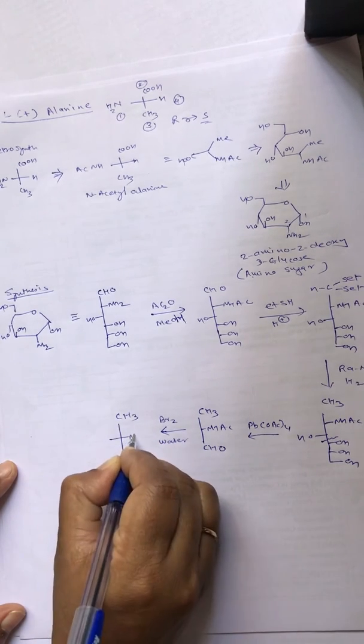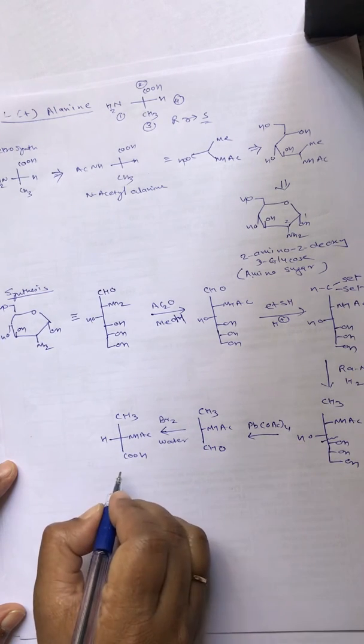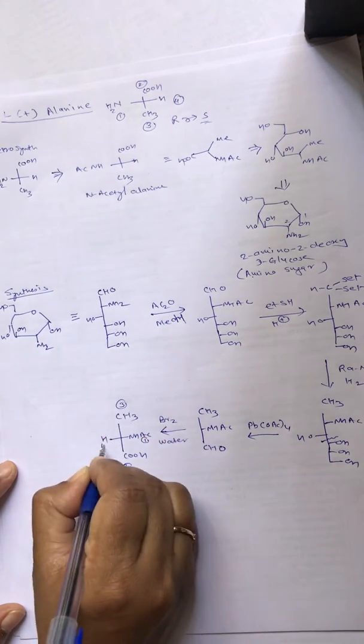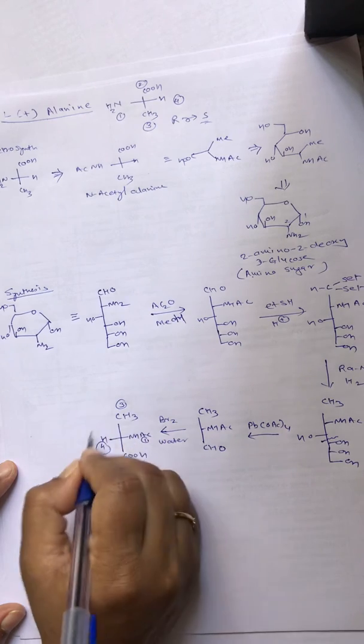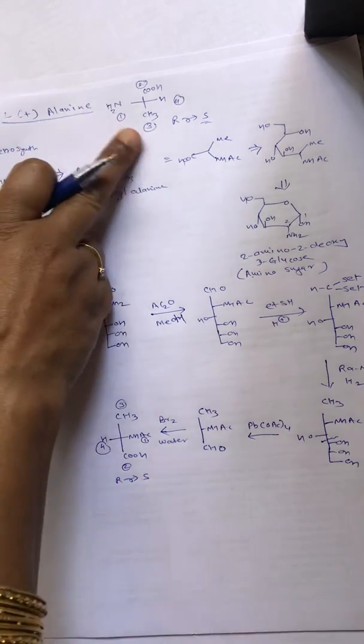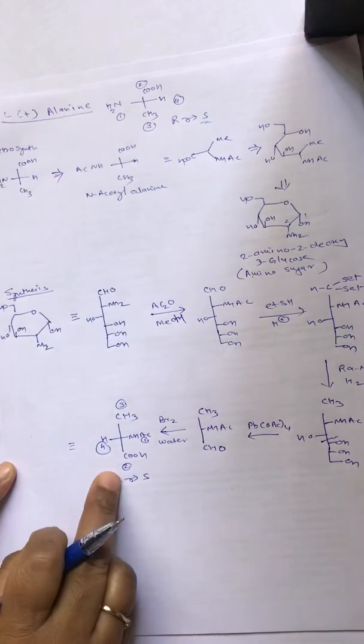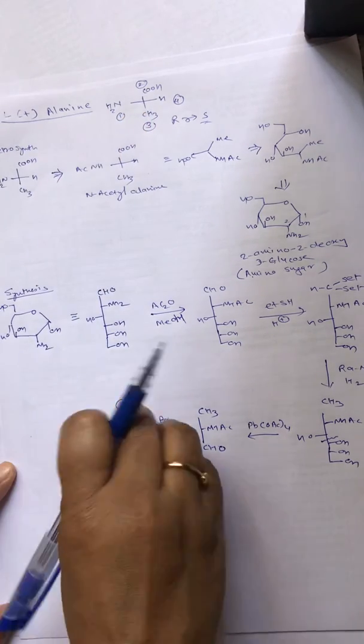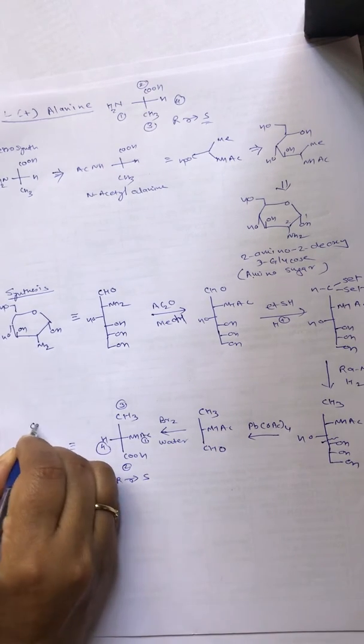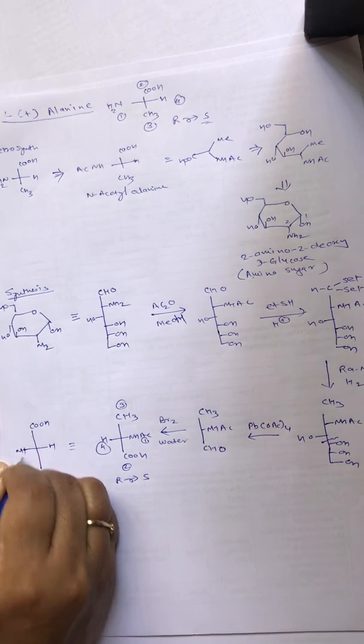So we will get CH3-NH-AC-COOH-H. If you look at the configuration, it will be 1, 2, 3, and 4 going clockwise, so it is S configuration. We want S configuration. The same thing can be written in the required form without changing the configuration. If I rotate this, it is going to give me COOH-CH3-H-NH-AC.